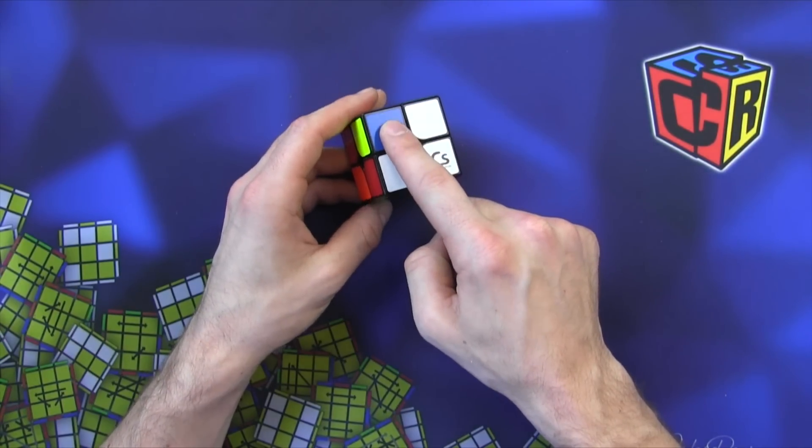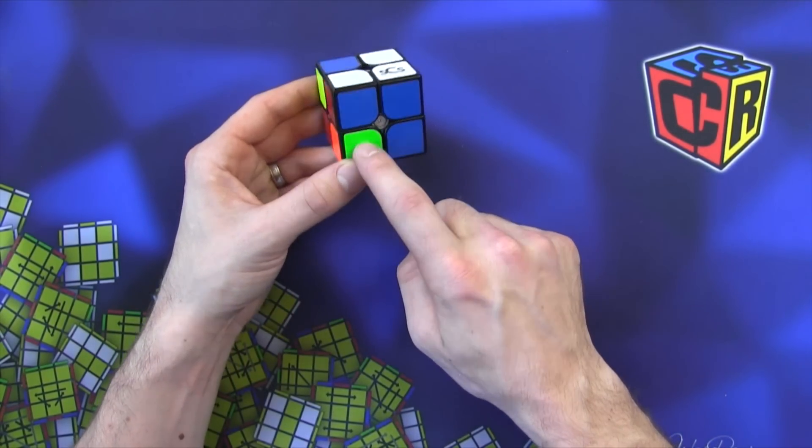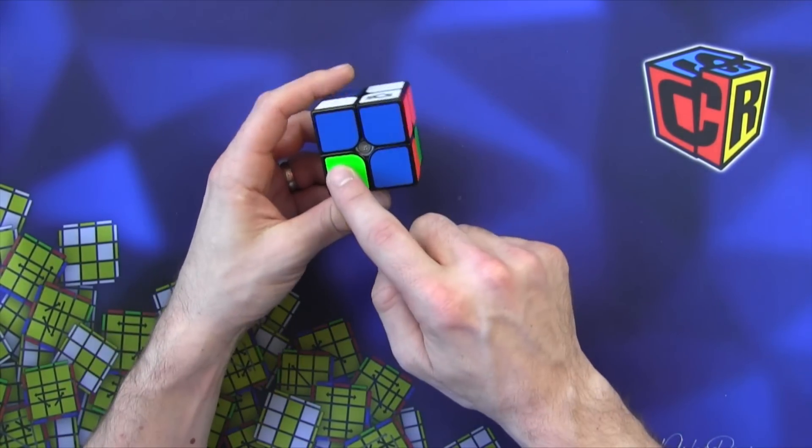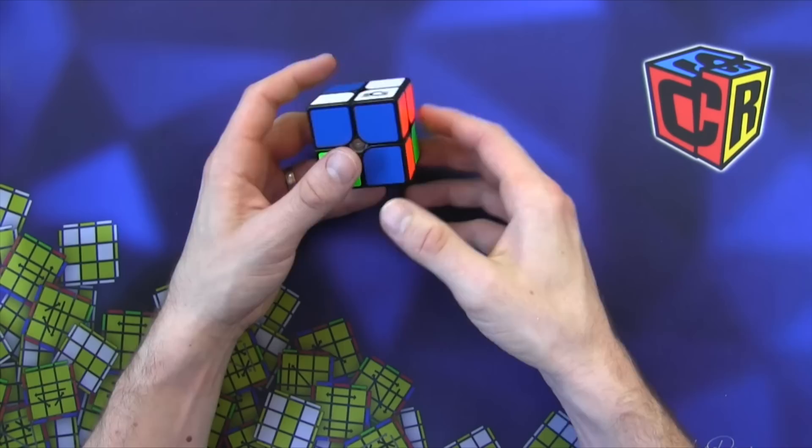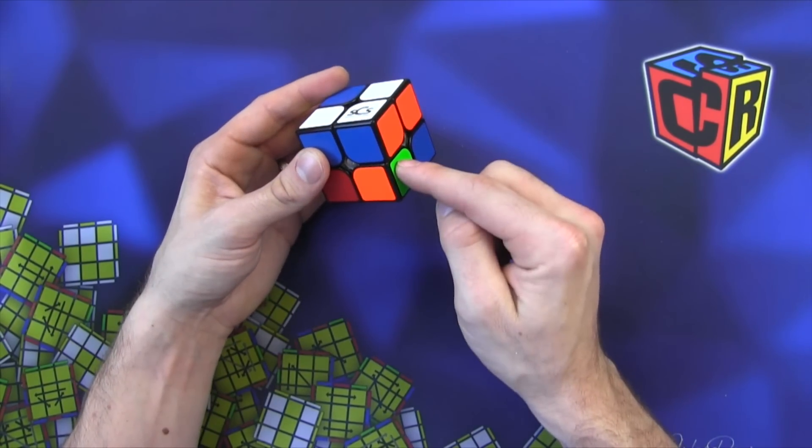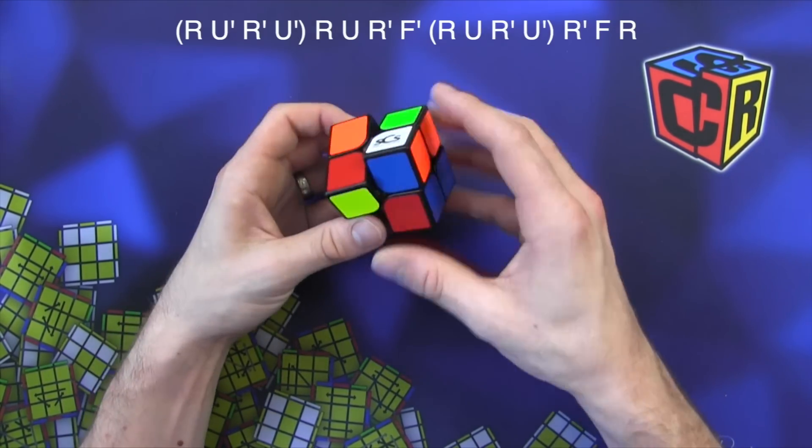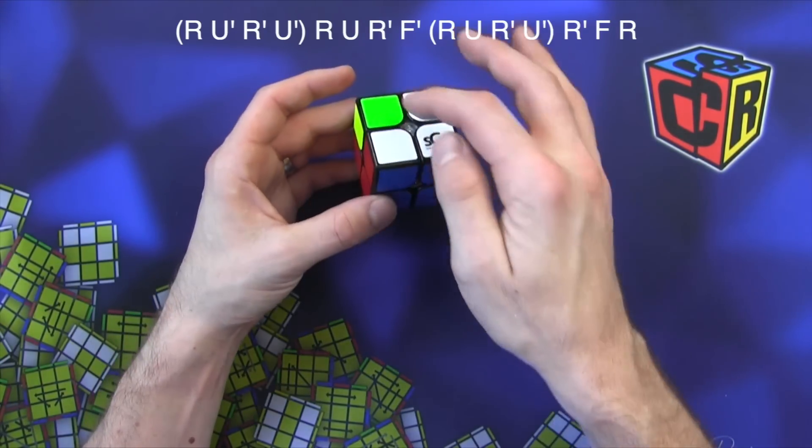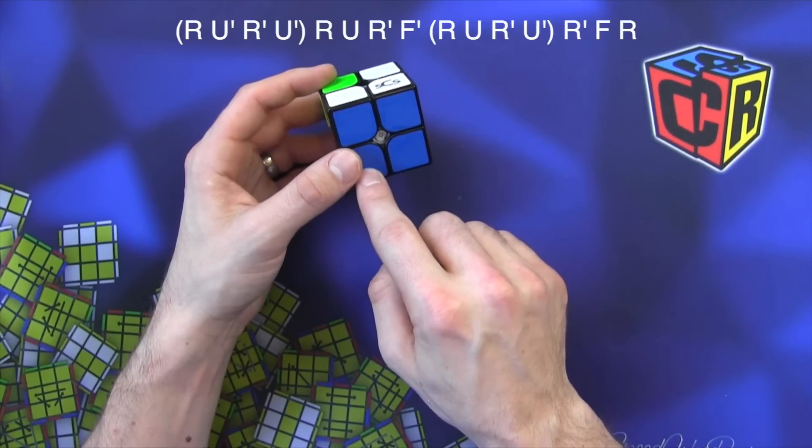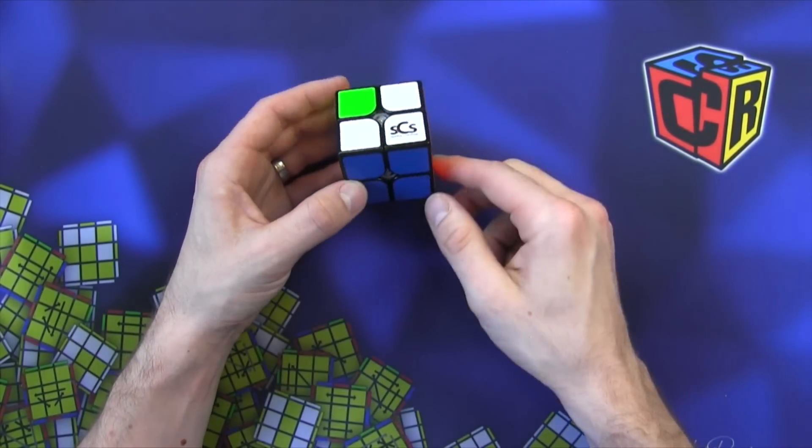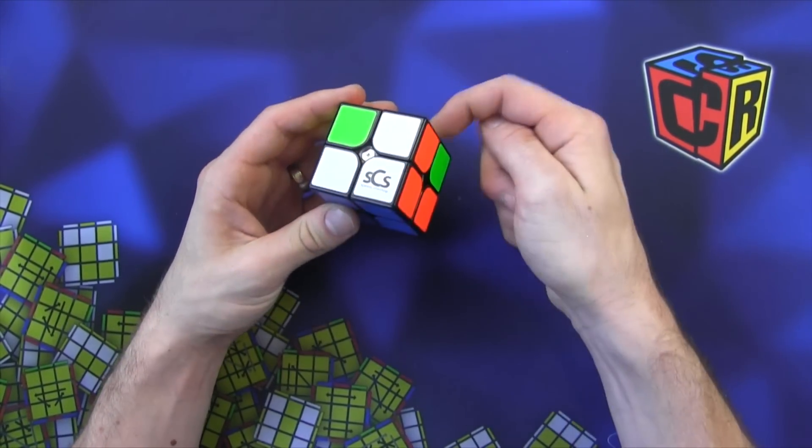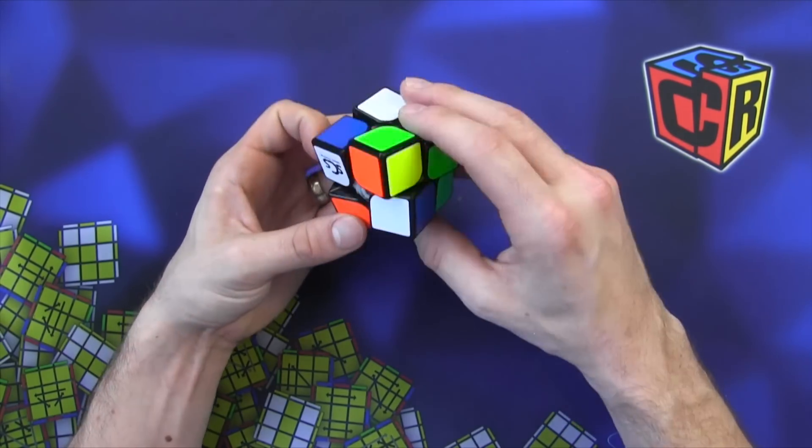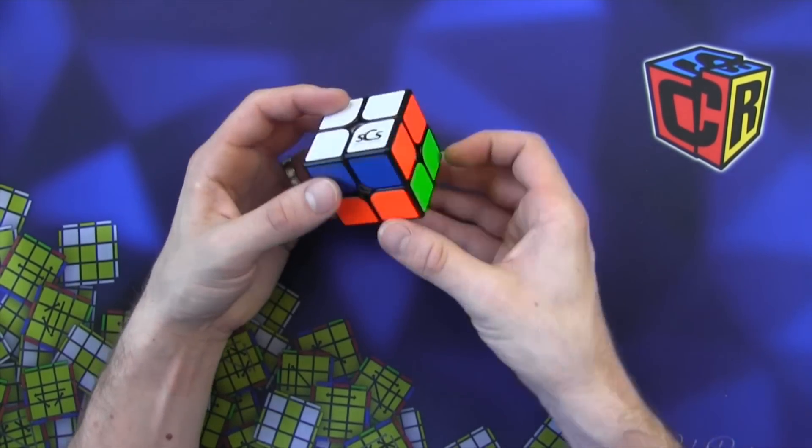So this blue sticker needs to go to H and H needs to go to P. So what I do is I move the H sticker to right here because remember this sticker moves to there. So I move H to there, do that Y permutation without the F moves, and then I move it back.